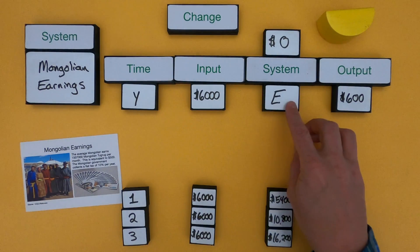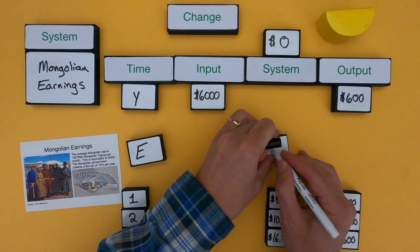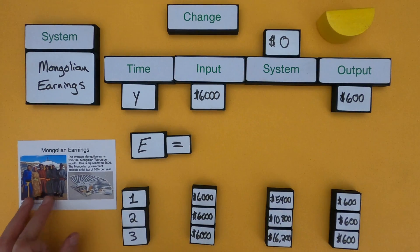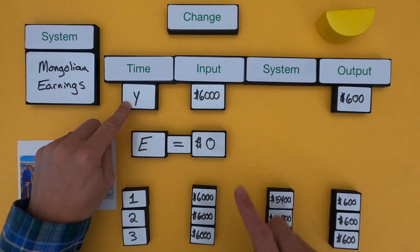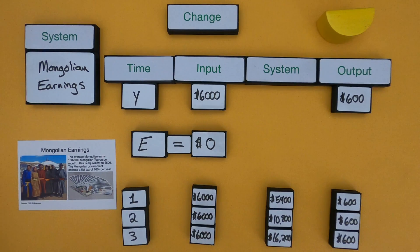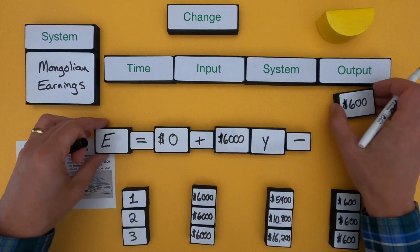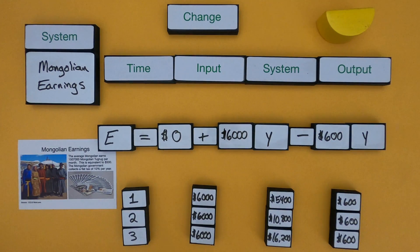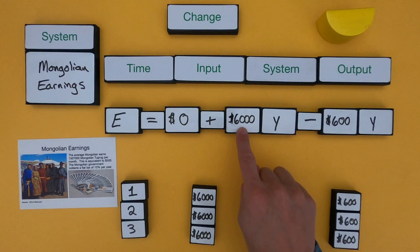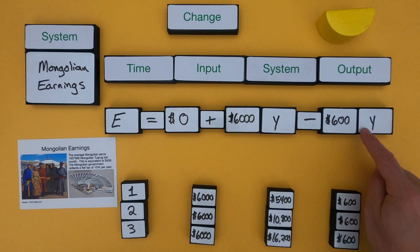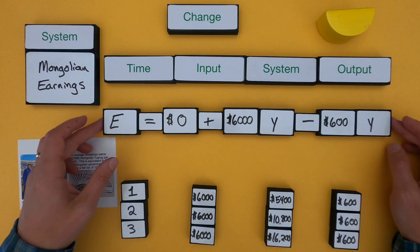Now I'm going to work out a mathematical model for Mongolian earnings over time. I'll say E is equal to... They start with zero dollars. Then for every year Y they get $6,000, so that's 6,000 times Y. And they lose $600 for every year, so we subtract 600Y. So the model is: E = 6000Y − 600Y. If I want to figure out earnings after 10 years in Mongolia, that's 6,000 × 10 = $60,000, minus $6,000 in taxes, giving $54,000 over a 10-year period. You can see the value of creating a mathematical model — we don't have to quantify the change step by step over time.